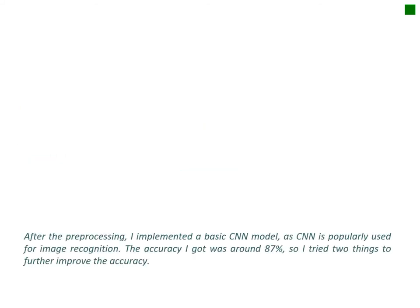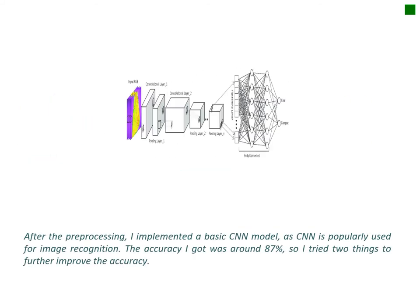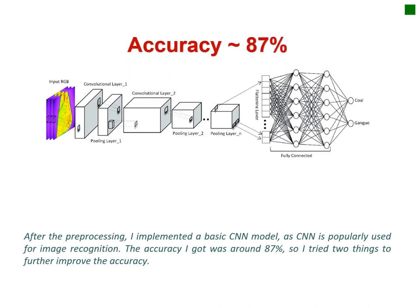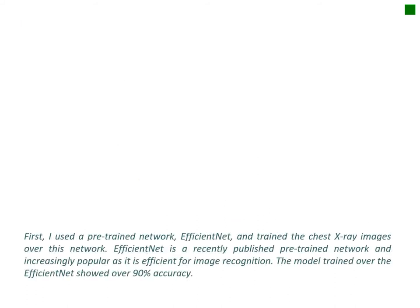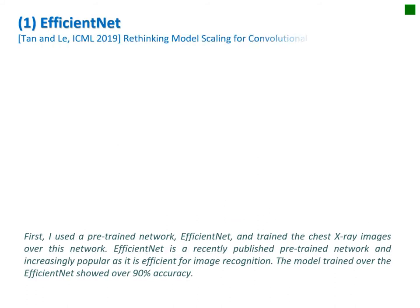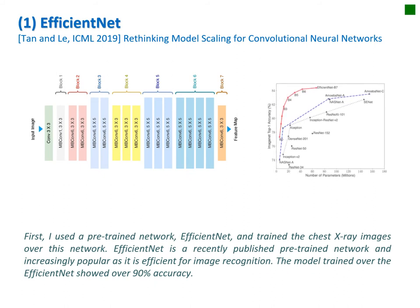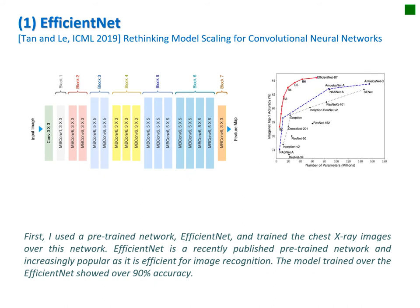After the pre-processing, I implemented a basic CNN model, as CNN is commonly used for image recognition. The accuracy I got was around 87%, so I tried two things to further improve the accuracy. First, I used the pre-trained network EfficientNet. I trained the chest x-ray images over this network. EfficientNet is a recently published pre-trained network, and is increasingly popular as it is efficient for image recognition.